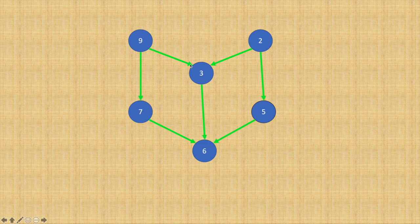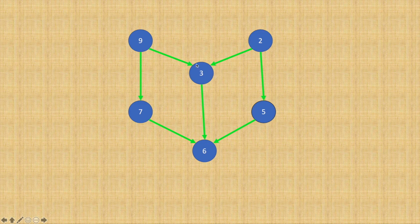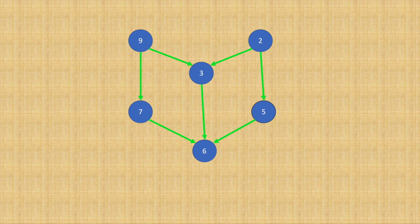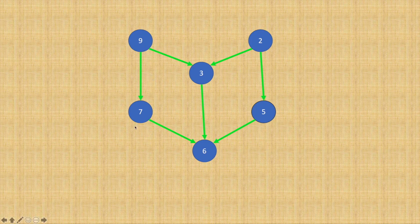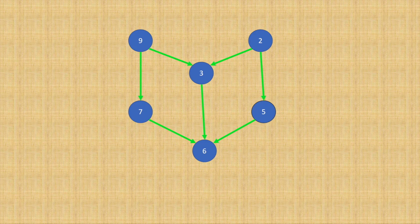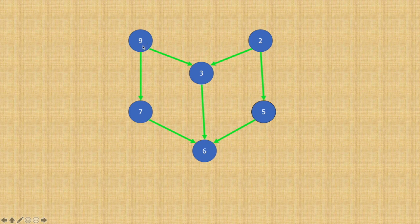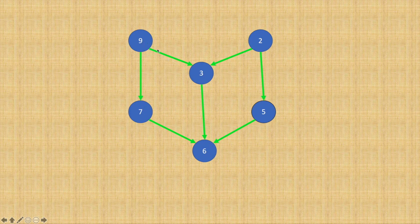And secondly, it has to be acyclic. That means it should not form a cycle in the graph. So here if you see, we have a connection from node 9 to 7, then from 7 to 6. Had it been an undirected graph, this would have formed a cycle. The nodes 9, 7, 6, 3, and 9 again would have formed a cycle.